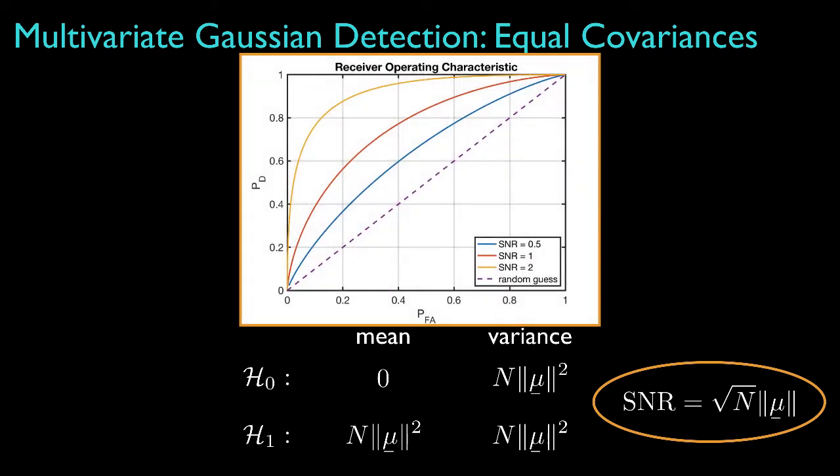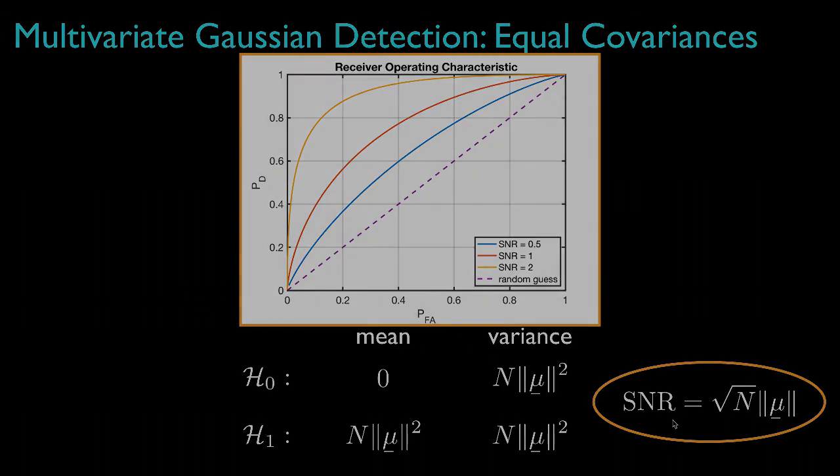Therefore, the receiver operating characteristic for this problem will look just like it did for the univariate case, provided that we interpret the signal-to-noise ratio appropriately.